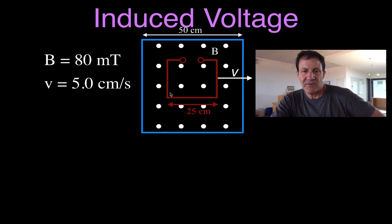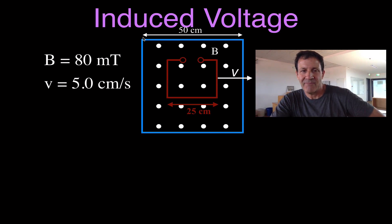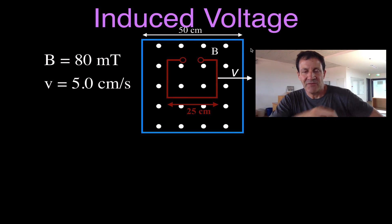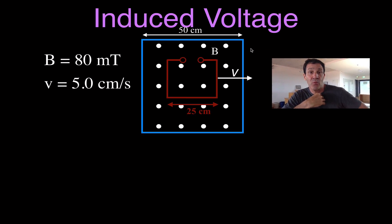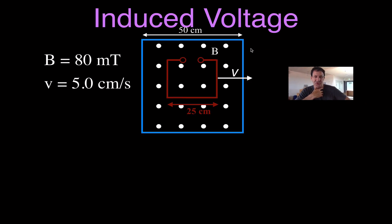The coil is 25 centimeters on a side. The magnetic field is inside this blue box, which is also a square and is 50 centimeters on a side. We want to figure out what is the induced voltage — that's the end product we want. We should ask ourselves: when will there be an induced voltage?